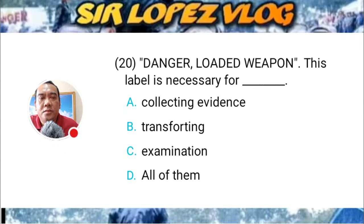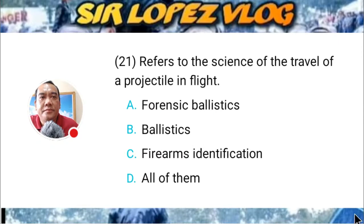Question number twenty-one: Refers to the science of the travel of a projectile in flight. A) forensic ballistics, B) ballistics, C) firearms identification, or D) all of them?